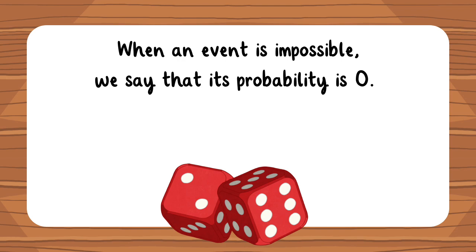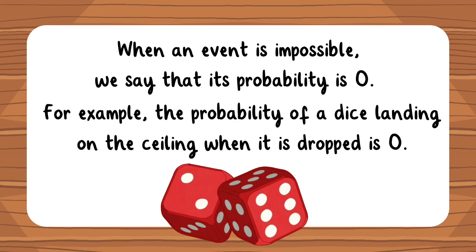When an event is impossible, we say that its probability is zero. For example, the probability of a dice landing on the ceiling when it is dropped is zero.